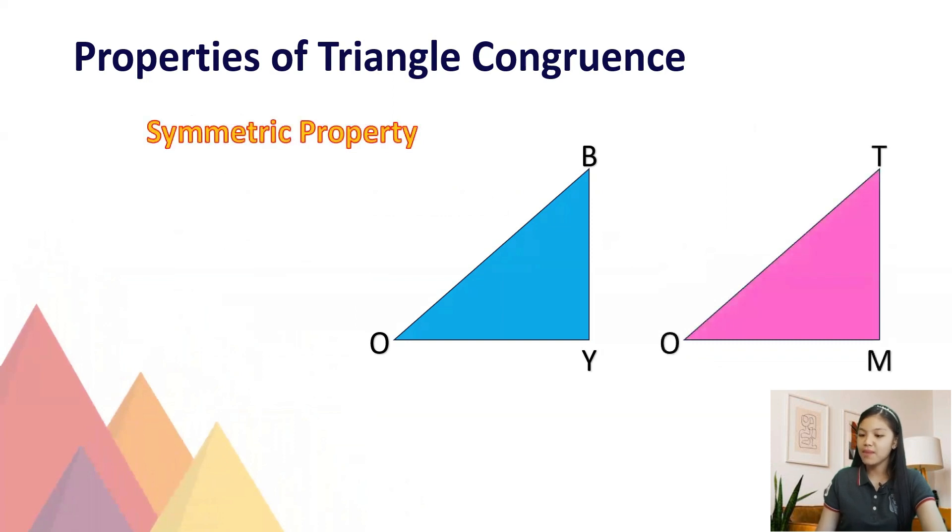Second is the symmetric property. If triangle boy is congruent to triangle Tom, then triangle Tom is congruent to triangle boy. In other words, if two triangles are congruent, then they are interchangeable.